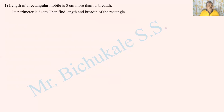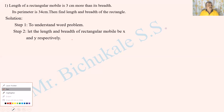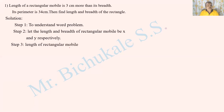Let length be x and breadth be y. The perimeter is the sum of all sides: 2x plus 2y equals the perimeter of the rectangle. Step 1: understand the world problem. Step 2: let the length and breadth of the rectangular mobile be x and y respectively. Step 3: length of the rectangular mobile is 3 cm more than its breadth means x equals y plus 3.